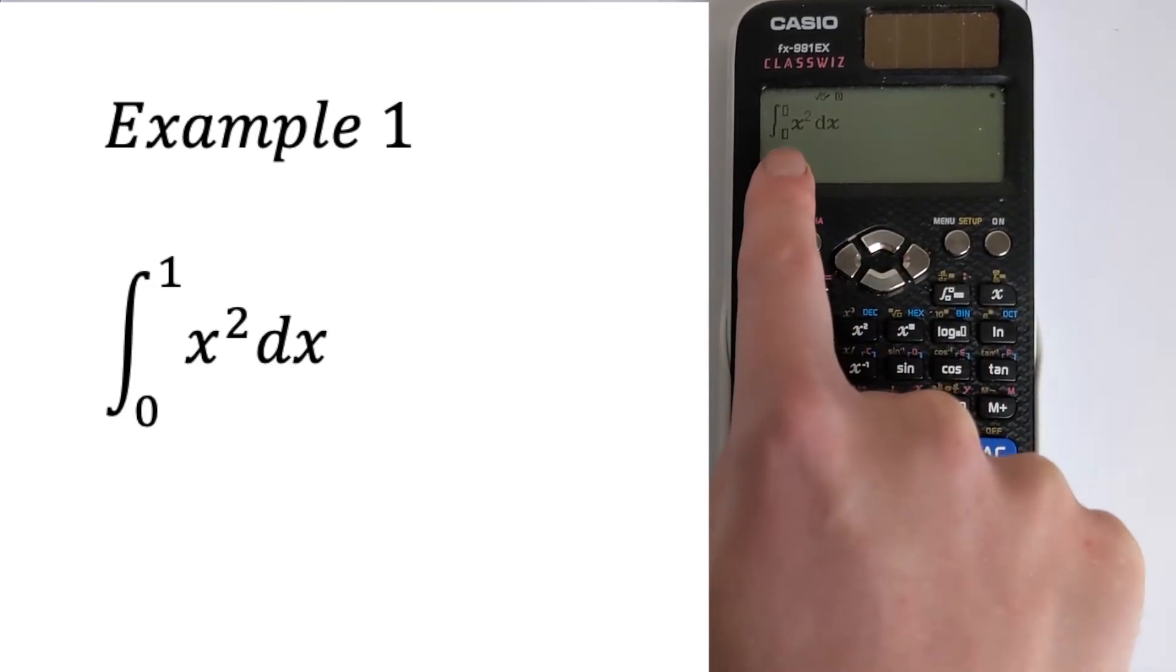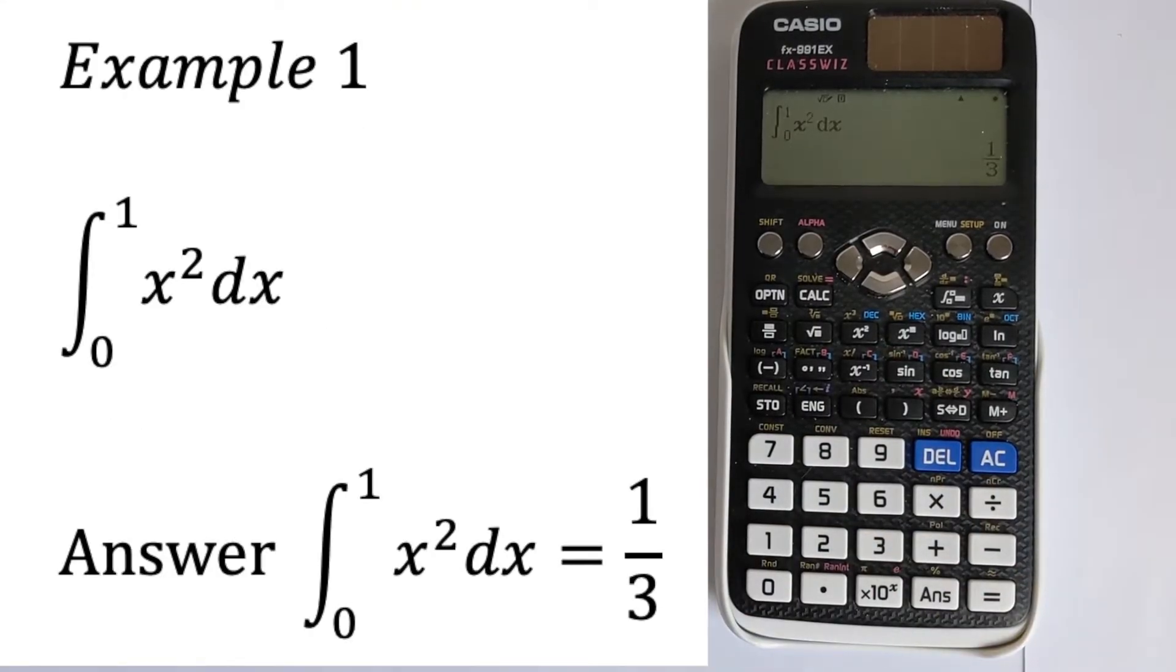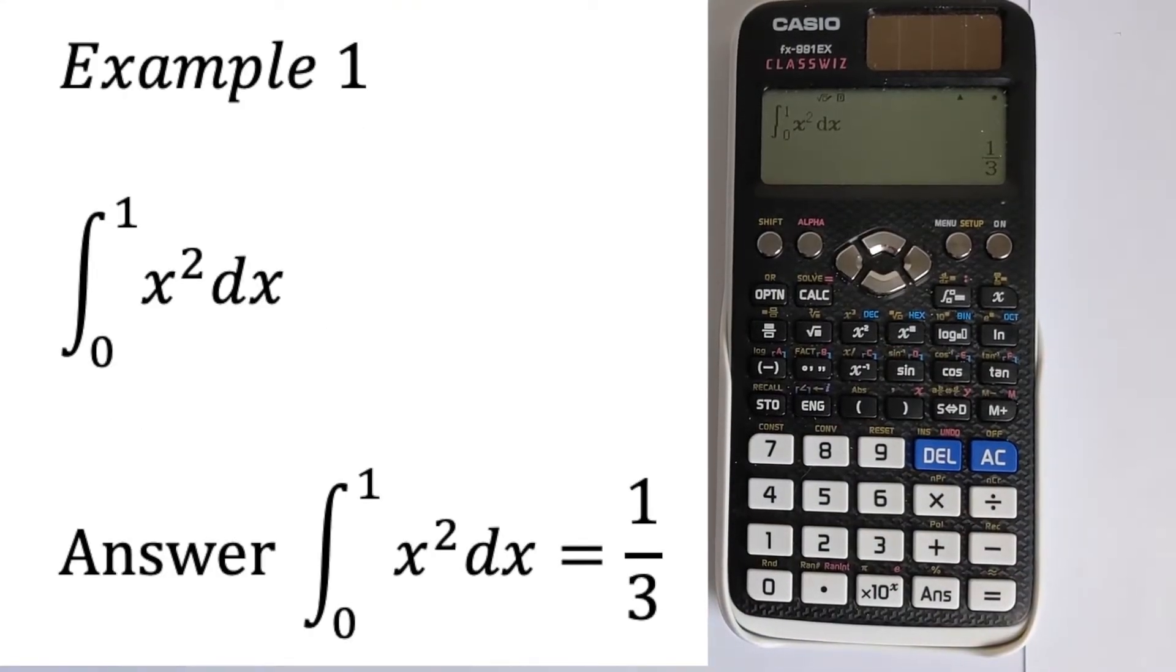Just use the x here and then we want a squared. If you press the across arrow then you can put in the limit. So we've got zero and then we've got one and then press equals and that will calculate it. Very simple. And that is of course the correct answer.